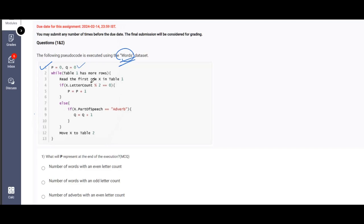While table 1 has more rows, read the first row X in table 1. Now coming to the fourth point, which is very important: if X dot letter count modulo divided by two is zero, what does this mean? This means that if the letter count of the picked up word is even, in such case we will be incrementing the value of P by one.